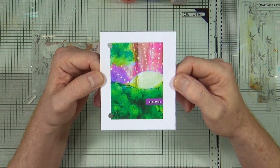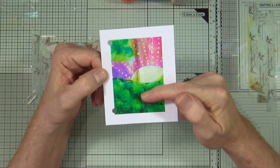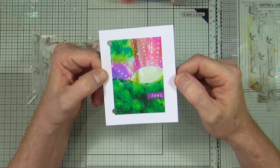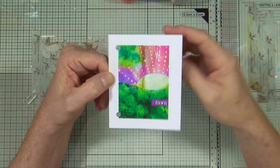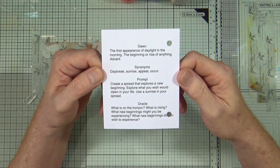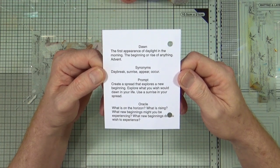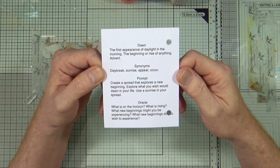This is the prompt for week number seven at Journal 52. As you can see, the word they've chosen for this week is dawn with a lovely kind of sunrise appearing in the background. The prompt reads: dawn, the first appearance of daylight in the morning, the beginning or rise of anything, advent. Synonyms for dawn are daybreak, sunrise, appear, and occur.